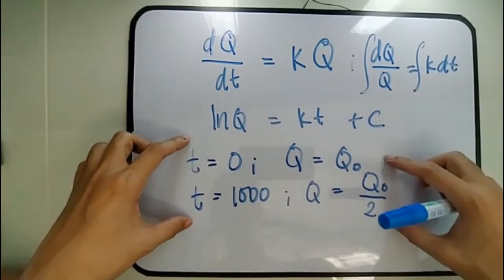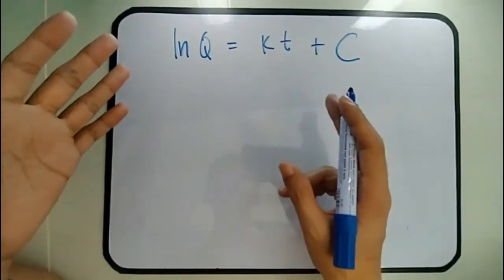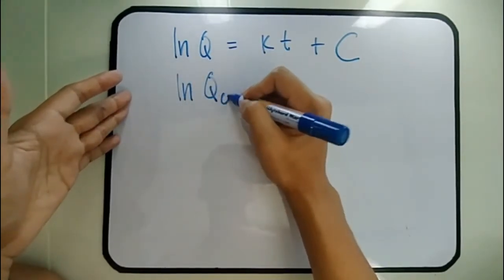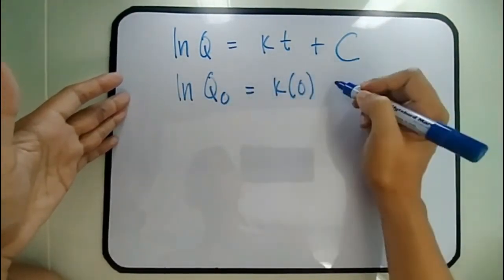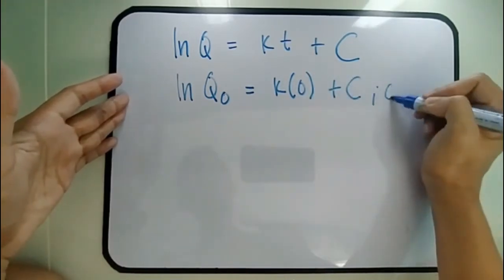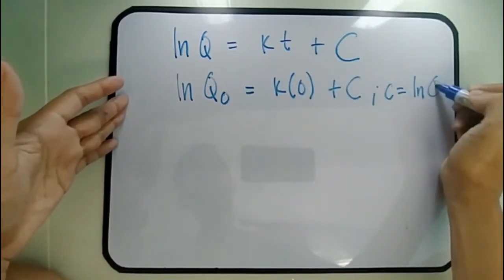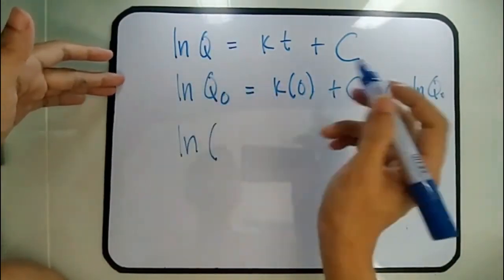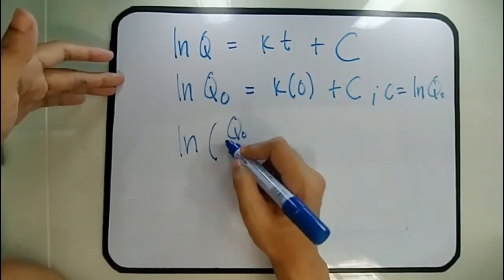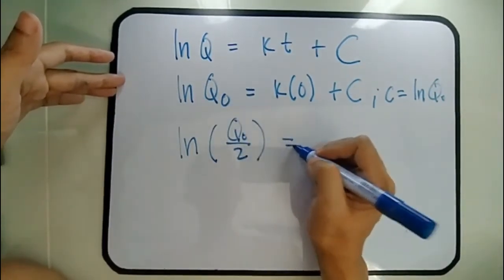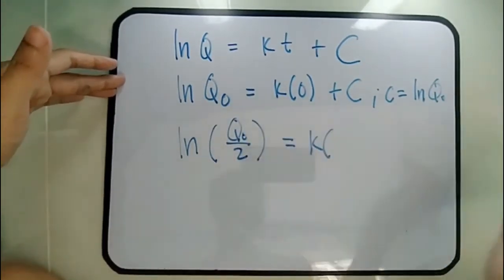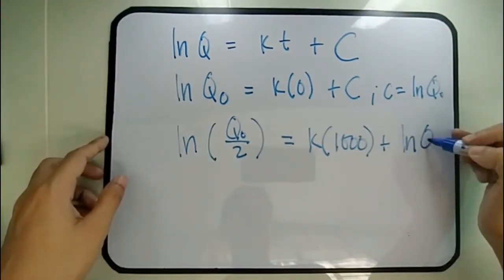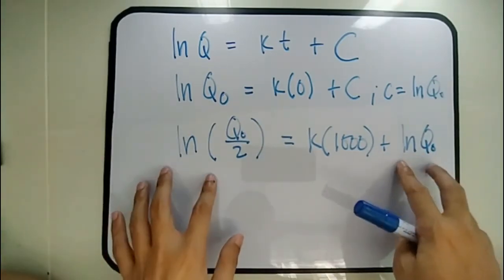Substituting the first condition into ln Q = KT + C: ln(Q₀) = K(0) + C, so C = ln(Q₀). For the second condition at T = 1000 (half-life): ln(Q₀/2) = 1000K + ln(Q₀). By laws of logarithms, this reduces to ln(Q₀) − ln(2) = 1000K + ln(Q₀).